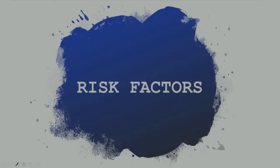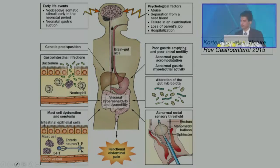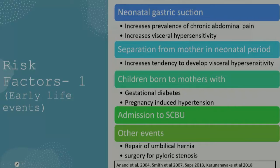What are the risk factors for chronic abdominal pain? This cartoon illustrated in a review we wrote for Nature Reviews Gastroenterology with our collaborators in the Netherlands shows that early life events, psychological stresses, genetic predisposition, gastrointestinal infections, motility disorders, altered gut microbiome, and mast cell degranulation can all contribute to development of functional abdominal pain symptoms in children.